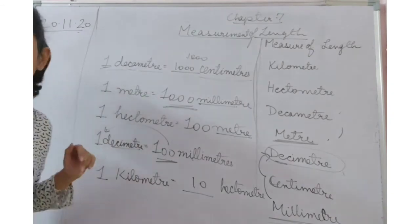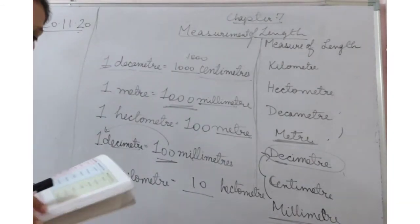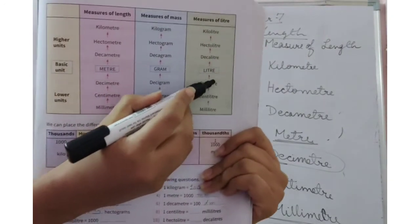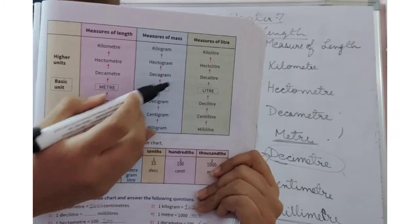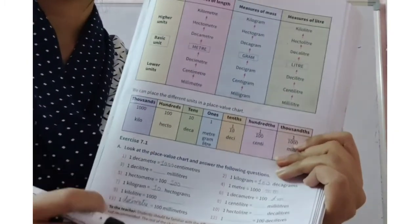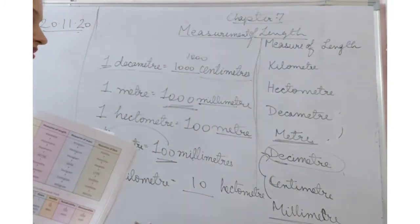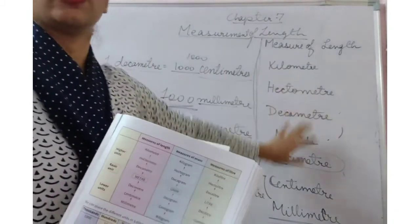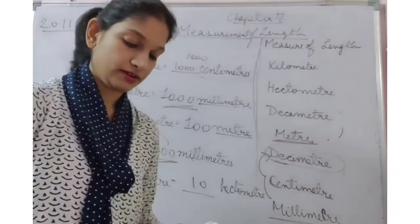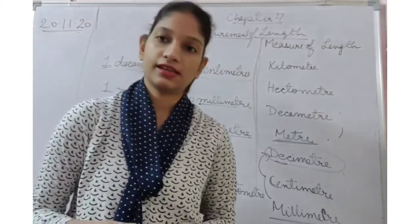Similarly, you can practice the conversions for measure of mass and measure of capacity (liters). The table is given in your book and the blanks are below. Just remember: whenever going down the ladder, multiply; whenever going up the ladder, divide. Thank you, that's all for today's session. Take care and stay safe.